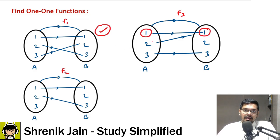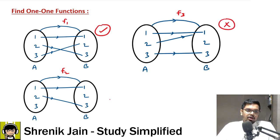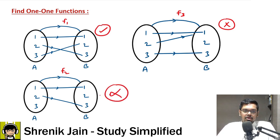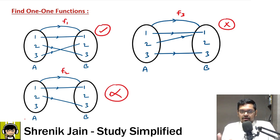For the second example, can I say it's a one-one function? No — when input is one the output is one, but when input is two the output is again one. Same output is not allowed, therefore this is not a one-one function. For the third example, the outputs appear unique, but it's not even a function — every input should be connected to some output, and one input is not connected. If it's not a function, there's no point discussing one-one.